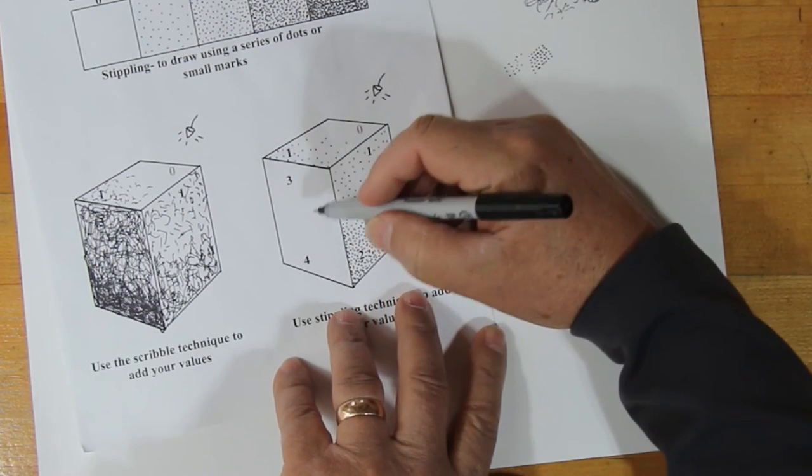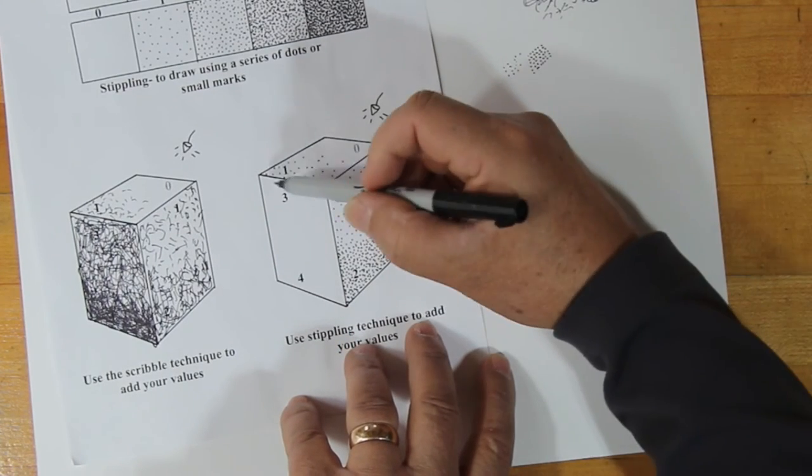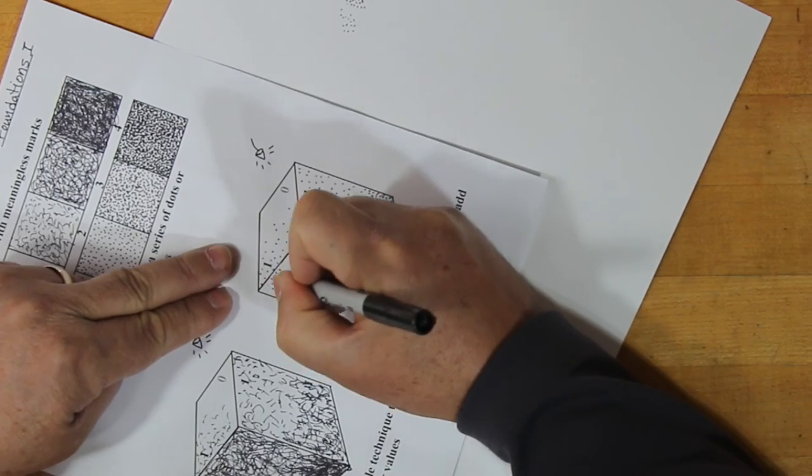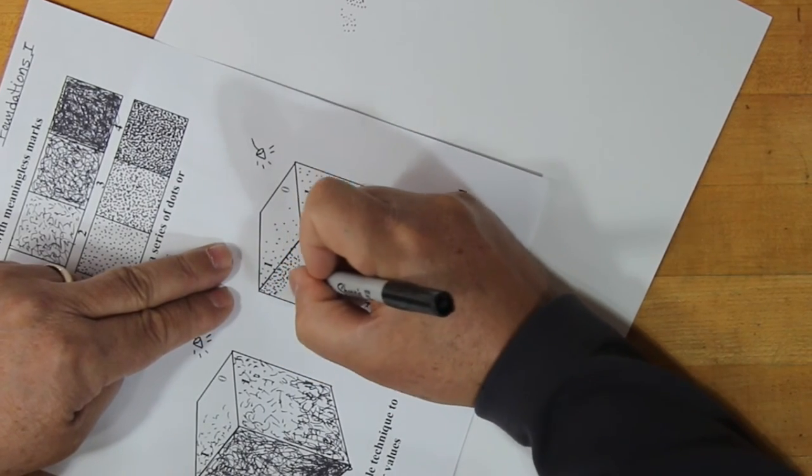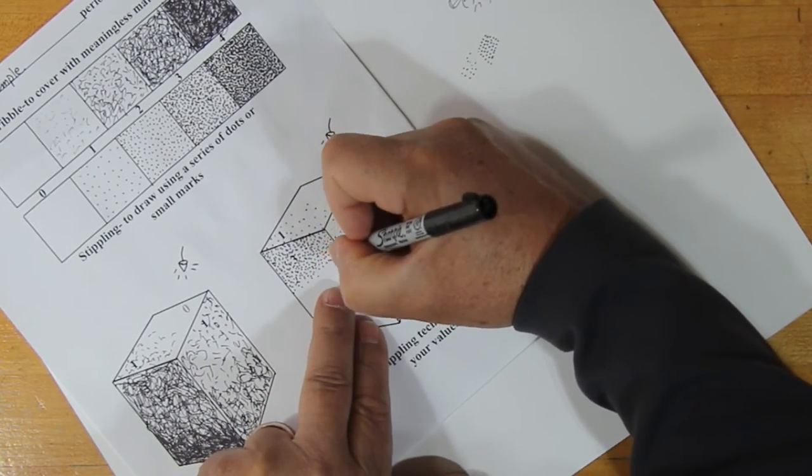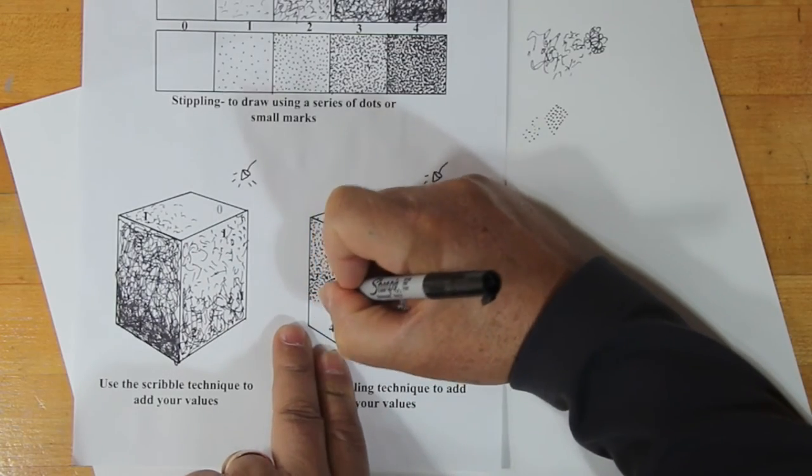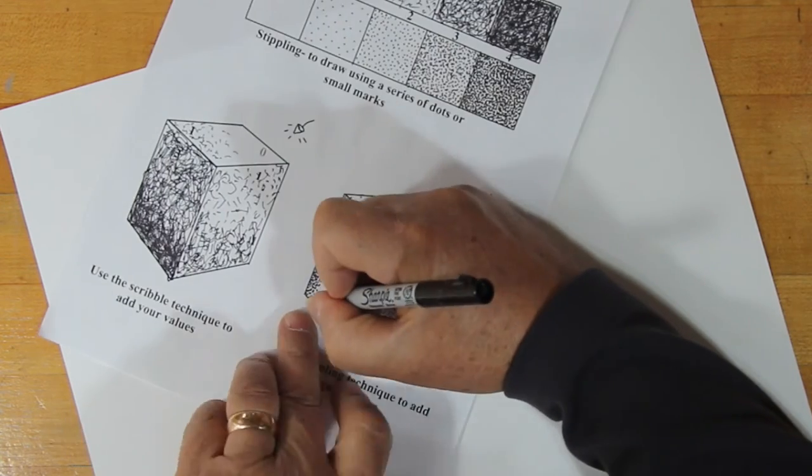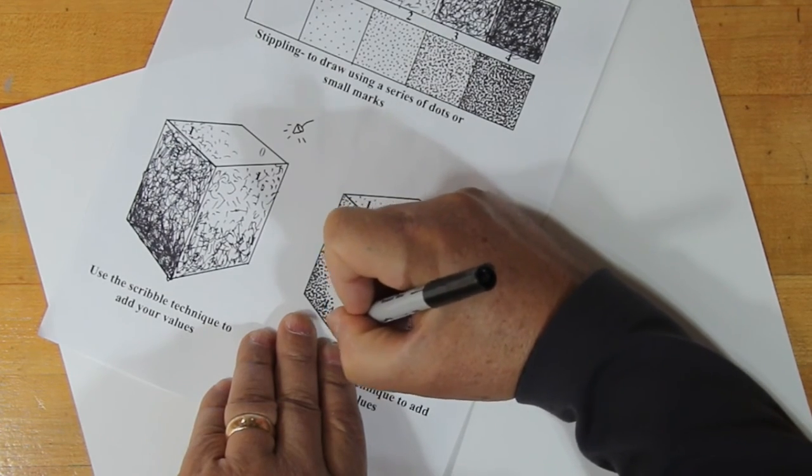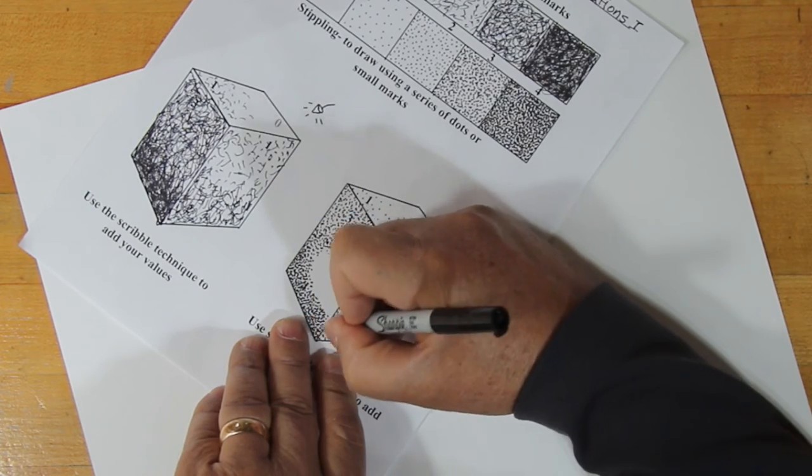So the last one, that one's going to take the longest, so I'm just going to fast forward through this, but you're basically going to start with a three here and then near the bottom, you're going to really, really get those close together.